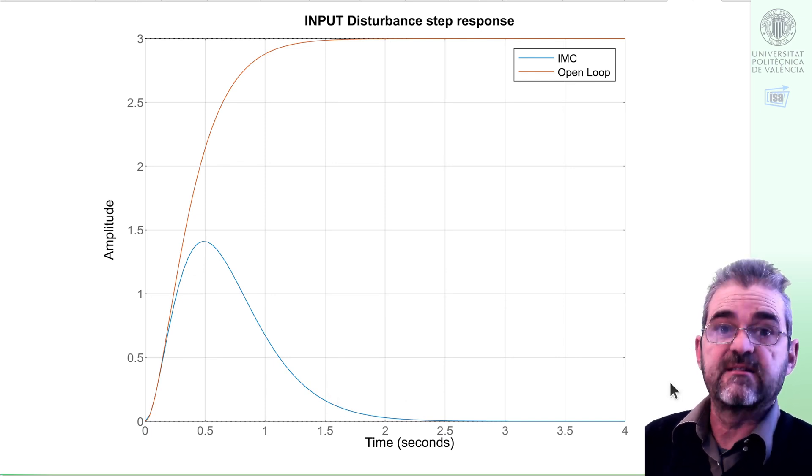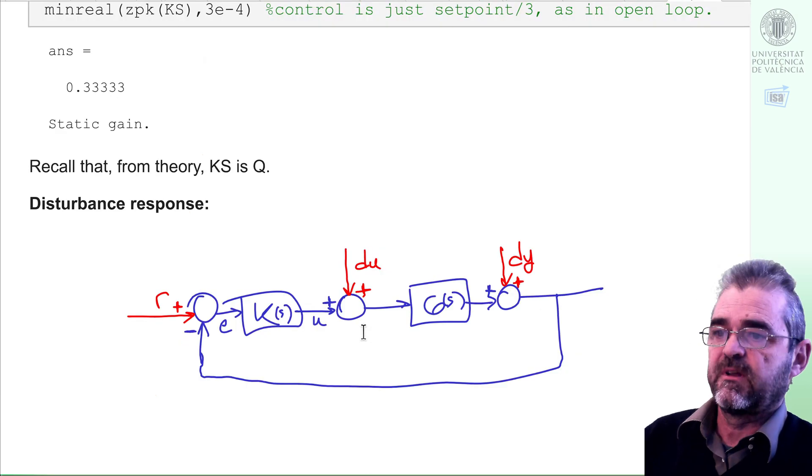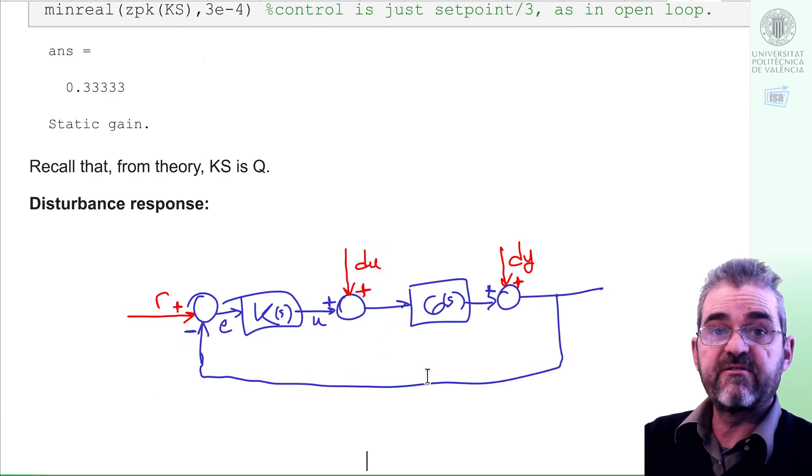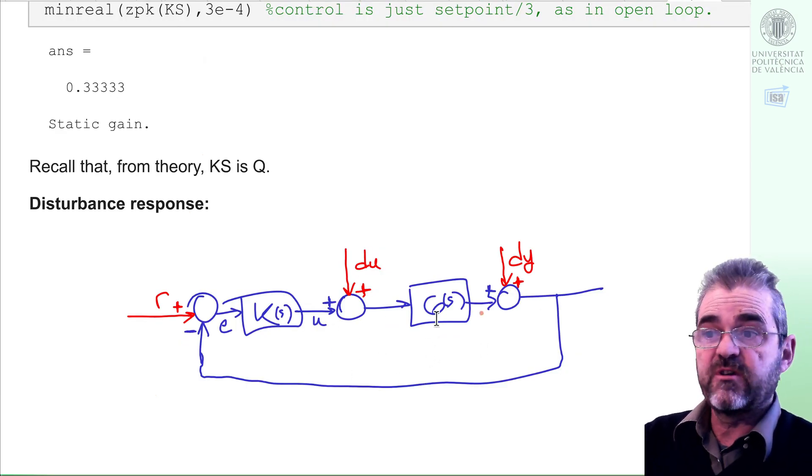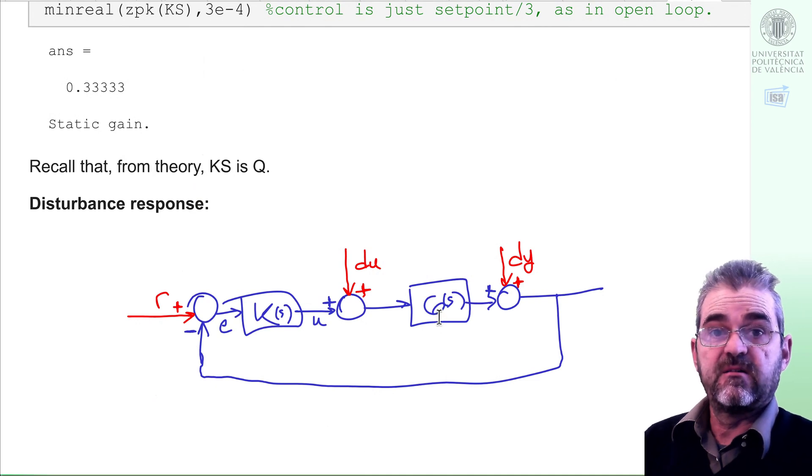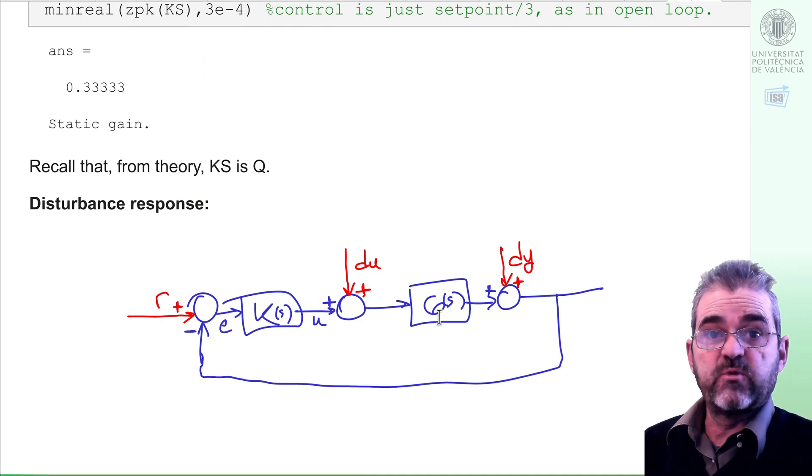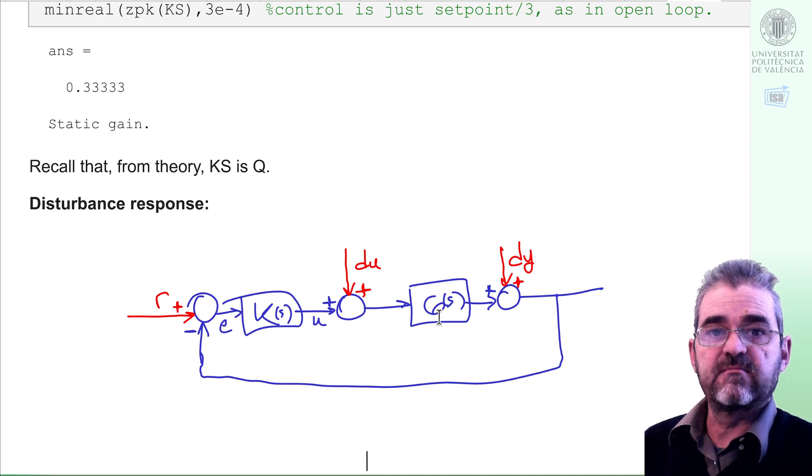So this is it. Let us conclude. In this video we have designed a controller in which the open loop poles are fast, so I don't wish to accelerate the process. In that case, IMC design is straightforward—the Q parameter is the inverse of the gain. Finished.